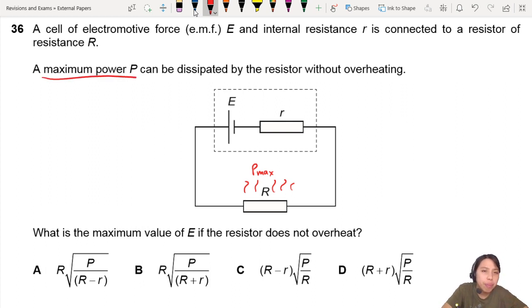Let's start with maximum power P. Why not? P_max equals to, shall we use IR? I square R? Yeah, I think we can do that.